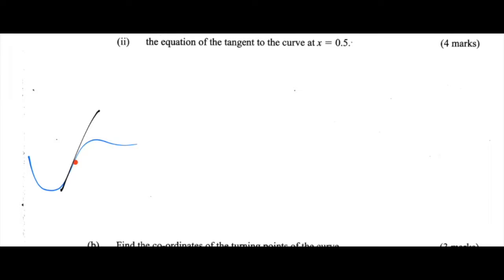So I've marked on a point x is equal to 0.5 here with a red dot. The tangent to the curve at the point when x is equal to 0.5 is a straight line which touches the curve and is at right angle, or 90 degrees, to the curve at that point.